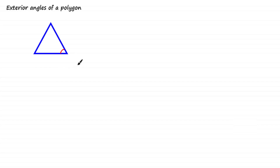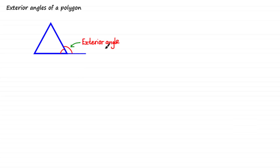So what is an exterior angle? Well, if you take any side and you extend the line, the angle between that extended line and the line next to the side is the exterior angle. It's called the exterior angle because it's exterior to the interior angle. And these are other exterior angles of this polygon.